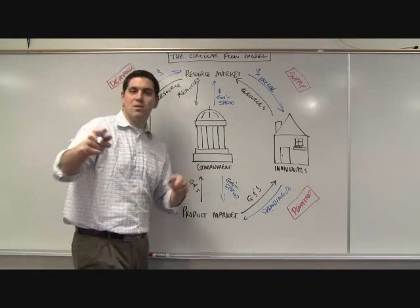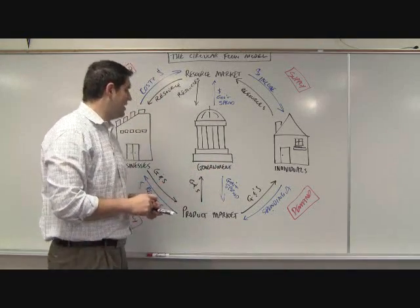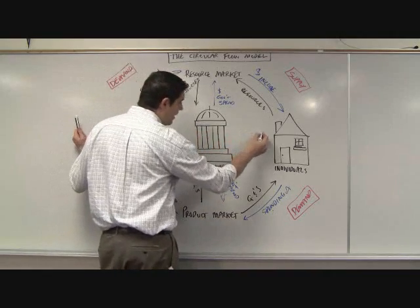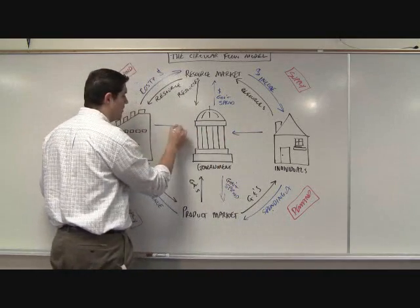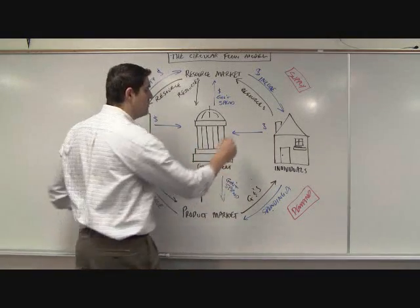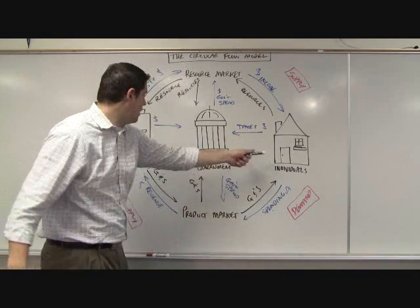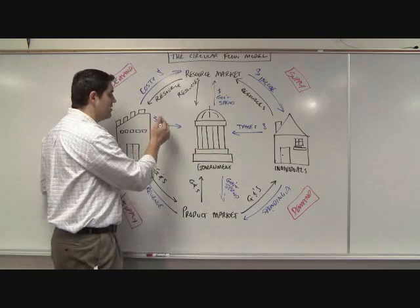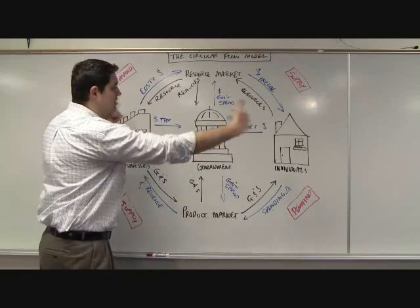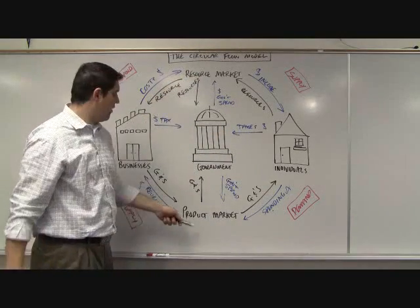We've got spending, but we need money going in. Where does the government get its revenue? It comes in from individuals and from businesses. From individuals, it comes from taxes — income taxes, sales taxes, taxing you and me. At the same time, the government taxes businesses in the form of corporate taxes. Tax money comes in from individuals and from businesses toward the government, then converted into spending.